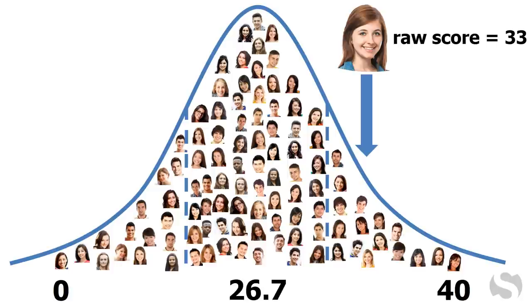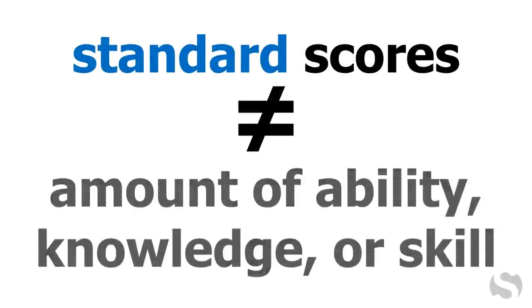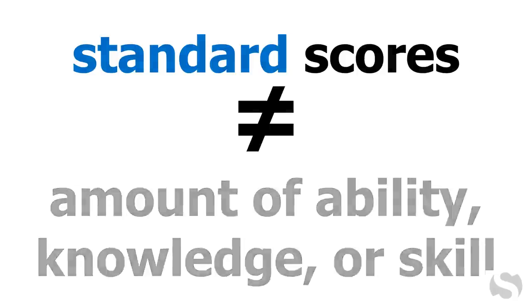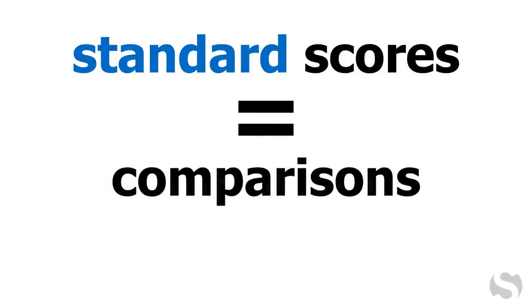In essence, standard scores are comparison scores that indicate how someone did relative to same-age peers — apples to apples. Standard scores do not represent amount of ability, knowledge, or skill. Rather, they compare a person's ability, knowledge, or skill to that of other similar people.